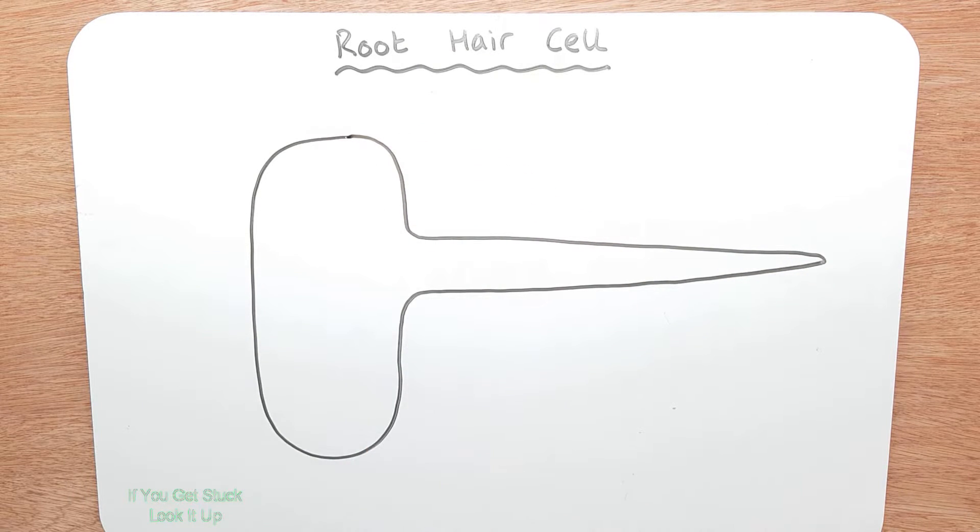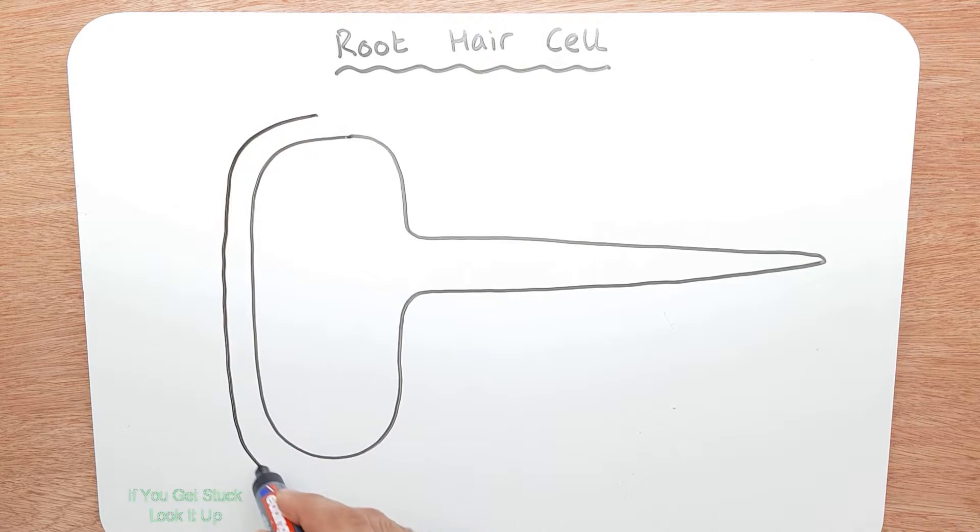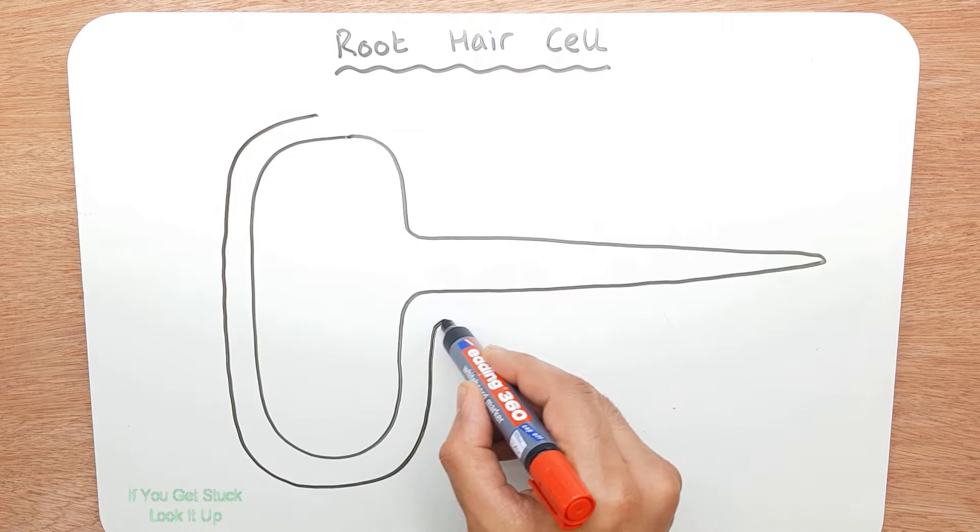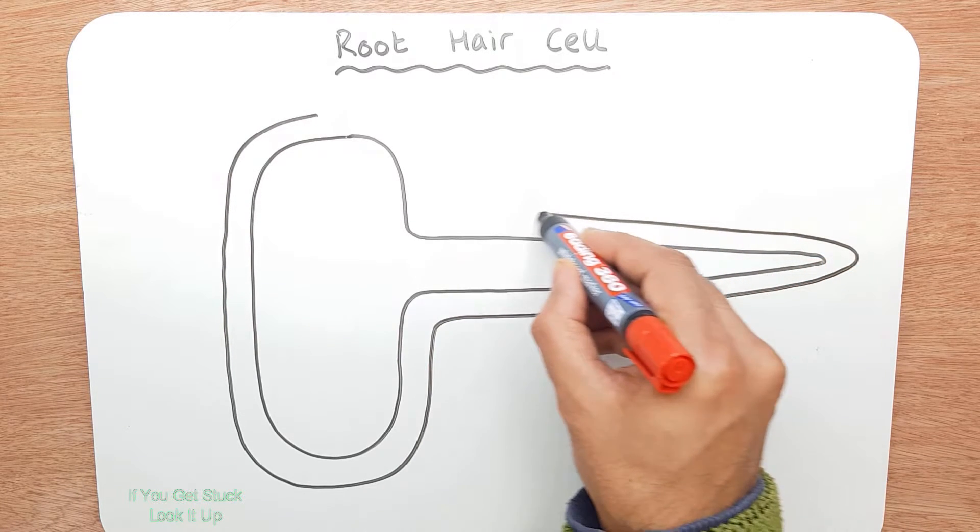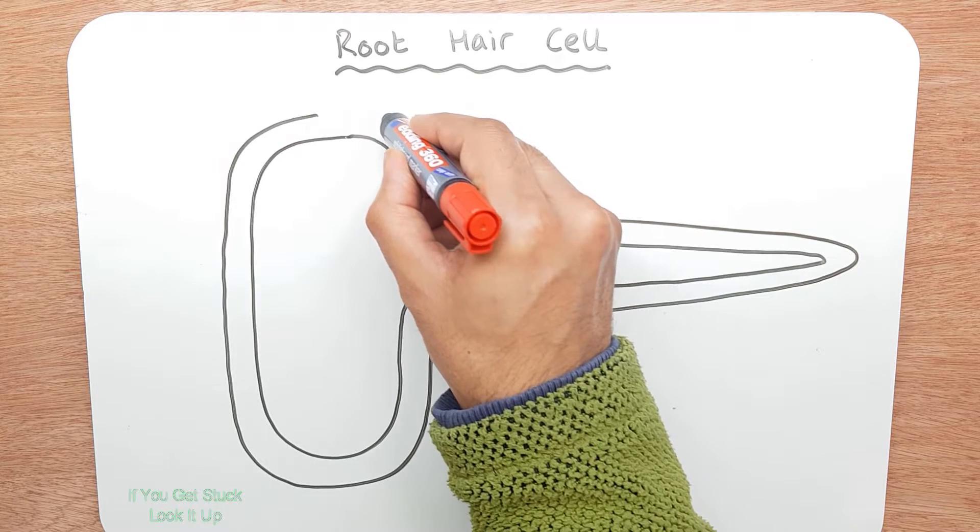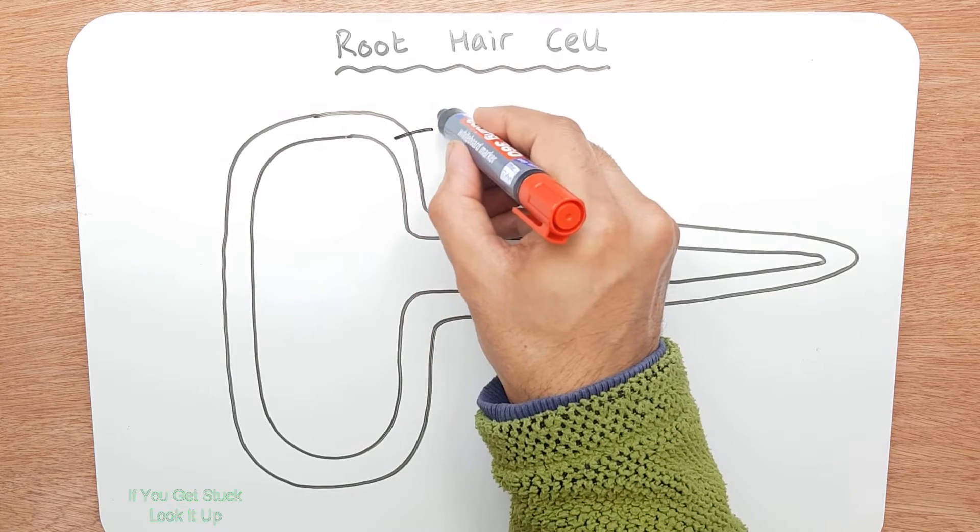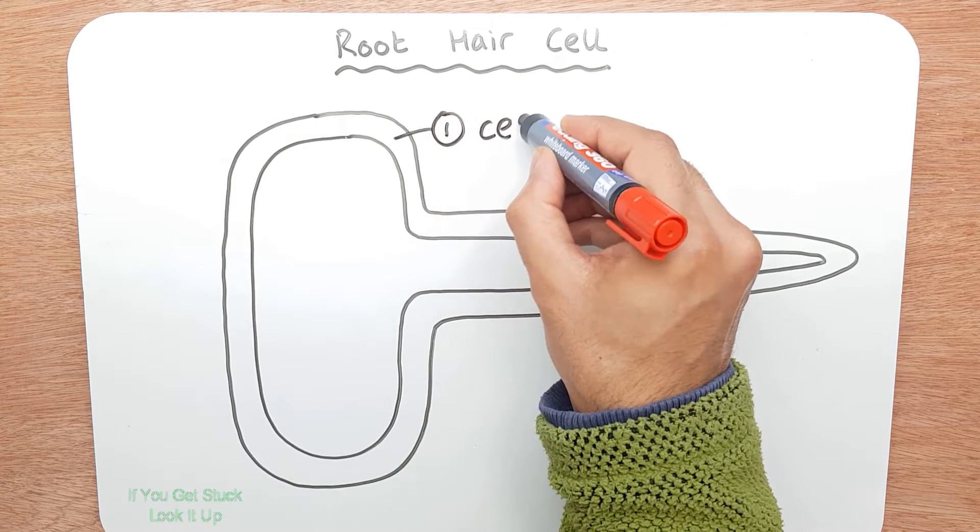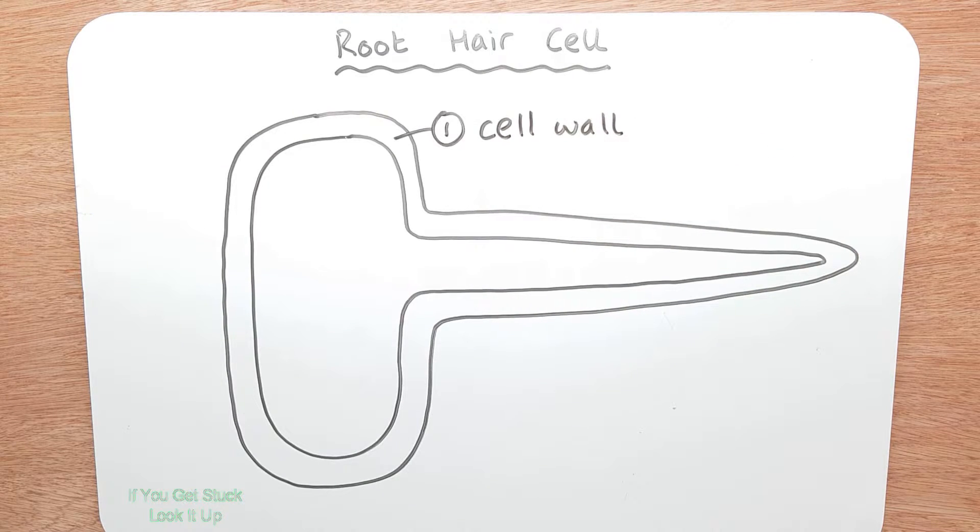Now we're going to turn that into a cell wall because it's from a plant. And you've got your cell wall. I'm going to exaggerate the thickness. So that there, first of all, is your cell wall. That's the first part of the structure we need to remember.